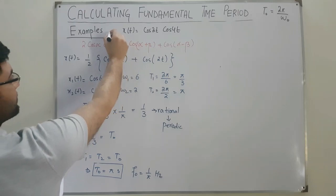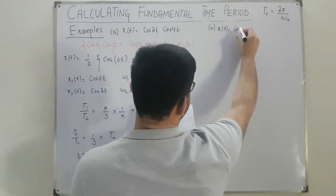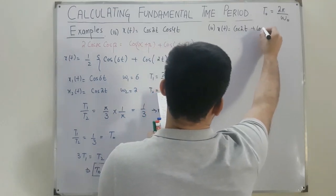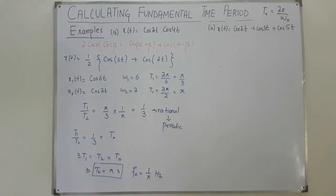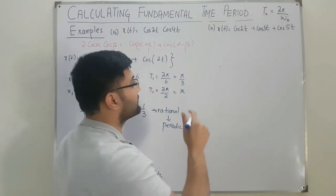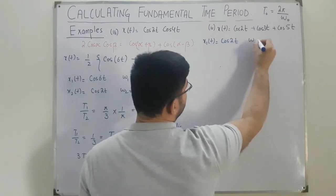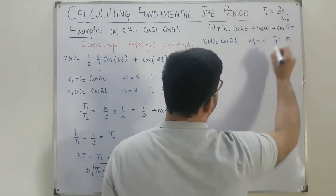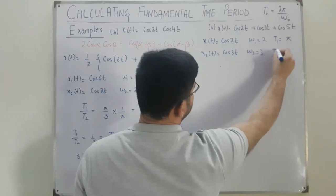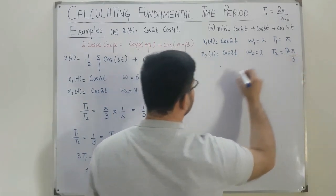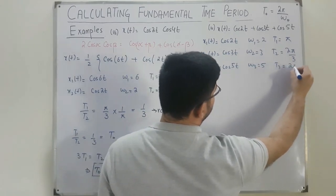Now for the next example with three components: x(t) = cos(2t) + cos(3t) + cos(5t). Breaking into components: x1(t) = cos(2t) → T1 = π; x2(t) = cos(3t) → T2 = 2π/3; x3(t) = cos(5t) → T3 = 2π/5.